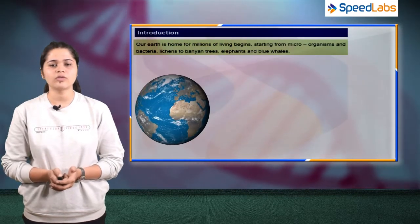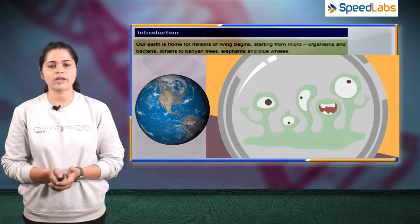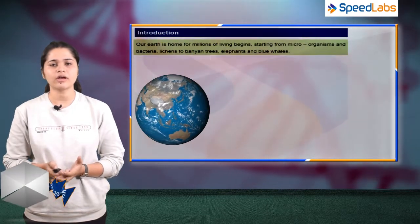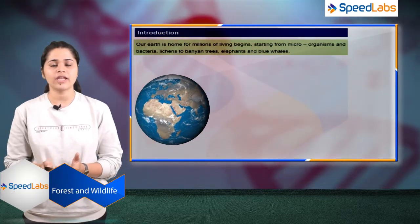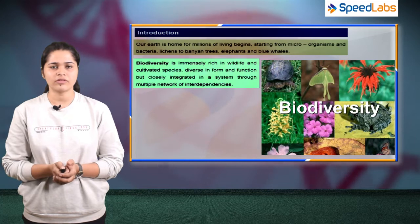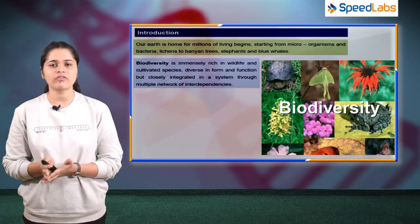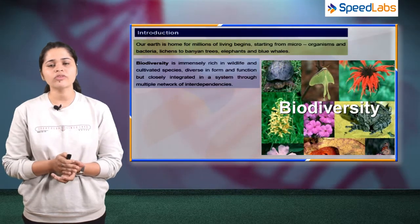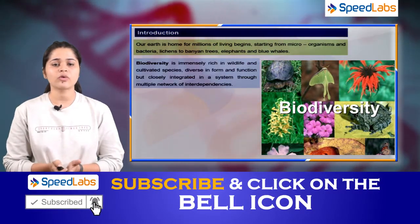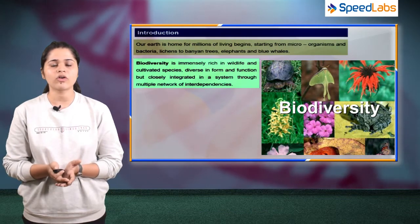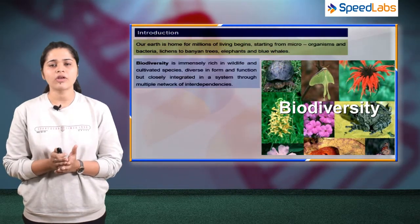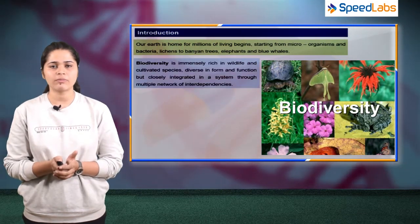As we know, our Earth is home to millions of living beings — starting from microorganisms and bacteria, lichens to banyan trees, elephants and blue whales. Our biodiversity is immensely rich in wildlife and cultivated species. Even though all the wildlife and species differ in terms of their form and function, they are closely integrated in a system through multiple networks of interdependencies, meaning all species are interdependent on each other.